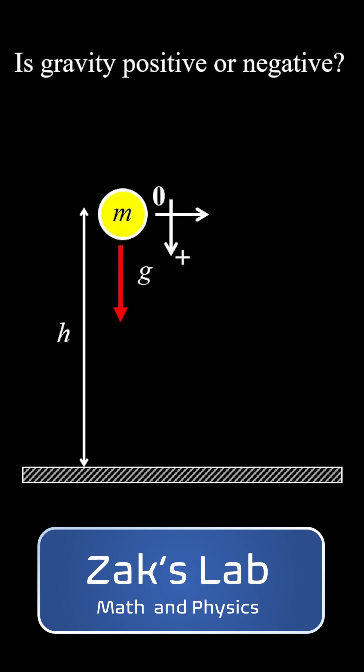Alternatively, we can use a coordinate system where downward is positive. The acceleration still has the same magnitude of g or 9.8 meters per second squared, but this time it takes a positive sign because it points in the positive direction for the coordinate system.